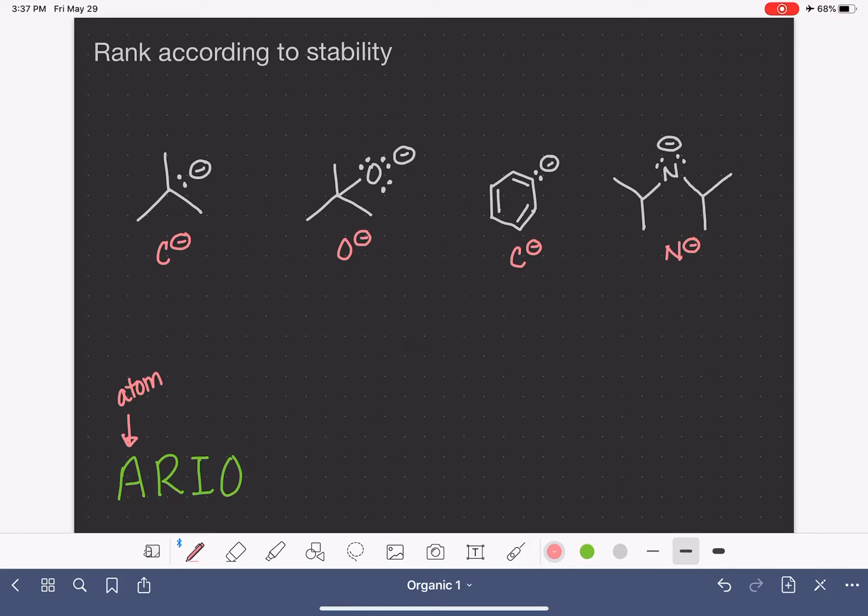What we need to do now is go look at the periodic table and see where these atoms sit relative to each other on the periodic table. If you recall from when I explained the ARIO rules, if the atoms are in the same row on the periodic table, we're going to use their electronegativity to predict stability. If they are in the same column on the periodic table, we are going to use their size to predict stability.